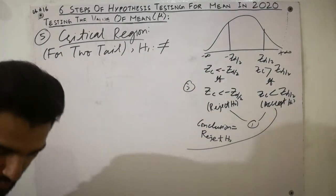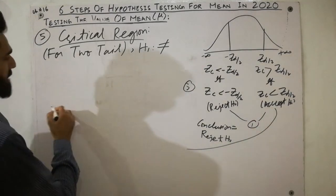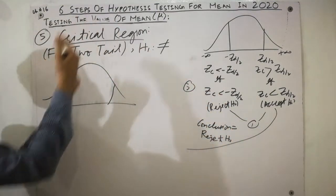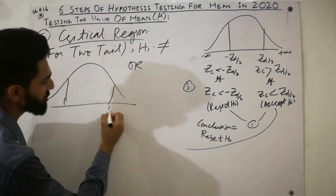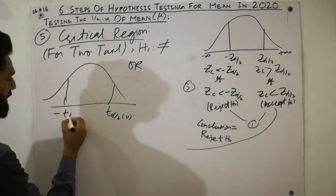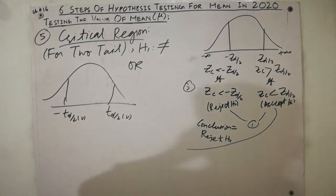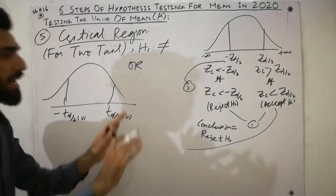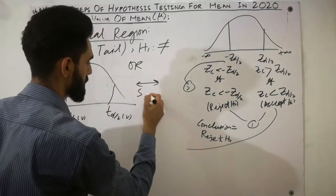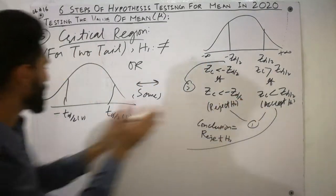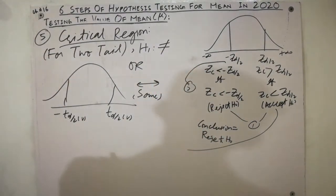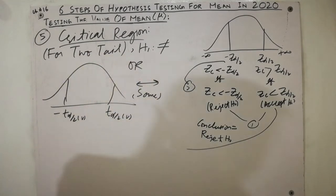Similarly, for the t distribution: the critical values are t-alpha/2 and minus t-alpha/2 with degrees of freedom v. The same logic applies — every rule that applies to the Z distribution applies equally to the t distribution. The t distribution and normal distribution cases are handled the same way.